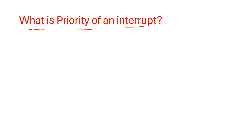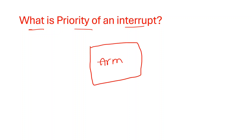Let me give you one example. Let's take our ARM processor — our ARM processor got three interrupts at the same time. Which interrupt should be processed first? That is decided by the priority. Every interrupt has its own unique priority.